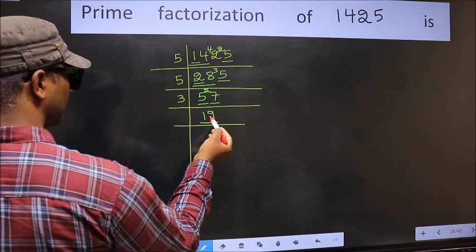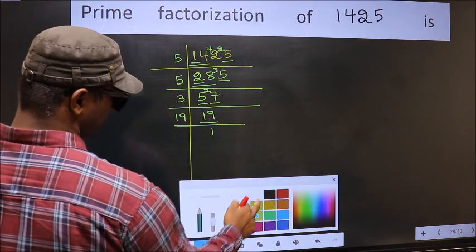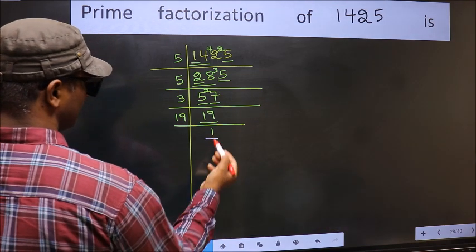Now here we have 19. 19 is a prime number. So 19 times 1 is 19. So we got 1 here.